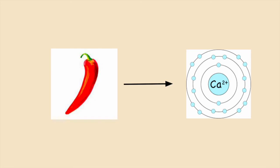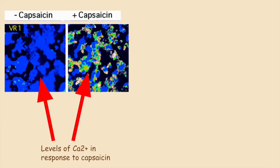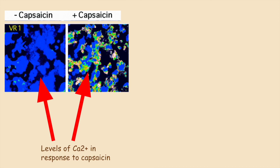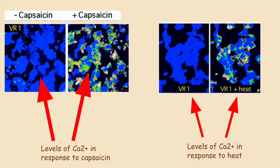So in order to test for an effective capsaicin receptor clone, they transfected the HEK-293 cell line with DNA encoding for the capsaicin receptor and examined calcium levels in response to capsaicin using a calcium-sensitive dye.